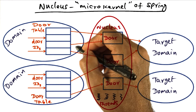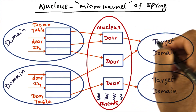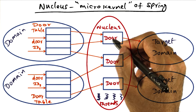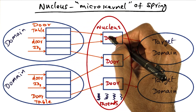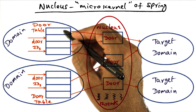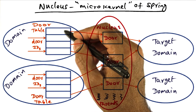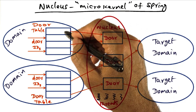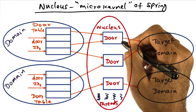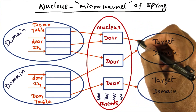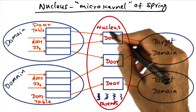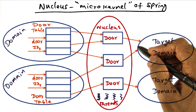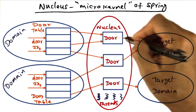In a similar manner, if I'm a client and I want the ability to invoke a target domain at a particular entry point, I need access to a door, and I get that by obtaining a door handle. Every domain has a door table, similar to the file descriptors in a Unix process. Every door ID in that door table points to a particular door. If I have a door handle for a particular door, that tells me I have the ability to make an invocation in the target domain that this door corresponds to.